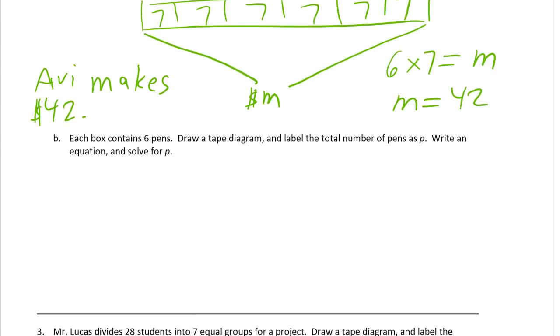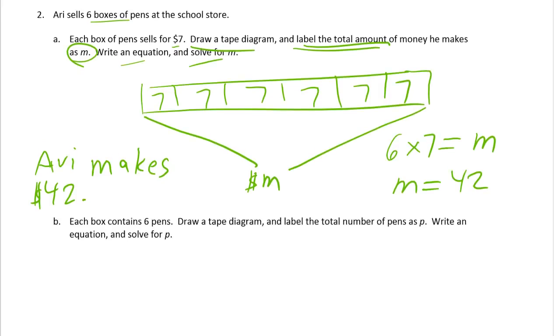Each box contains 6 pens. Draw a tape diagram and label the total number of pens as P. Okay, so same situation. This is part two of the same story. So we need a new tape diagram showing that each box has 6 pens. So instead of $7 in each box, we're going to have 6 pens in each box, and there's still 6 boxes. So we need a tape.